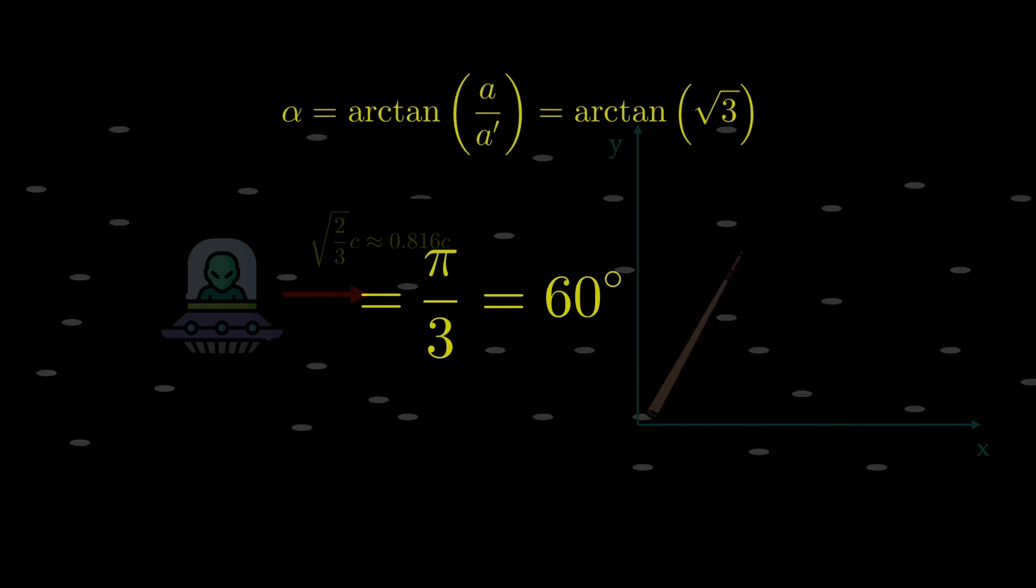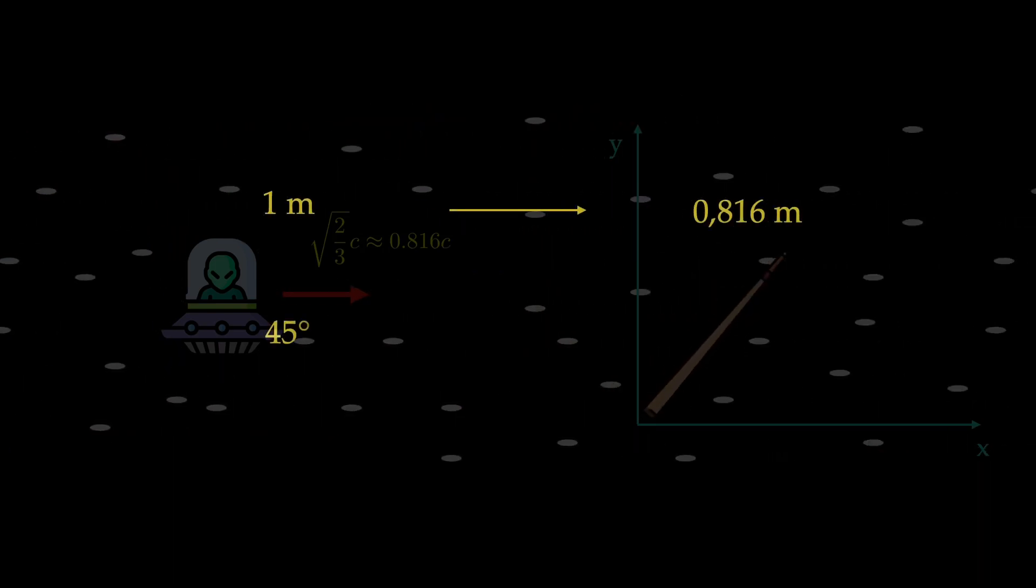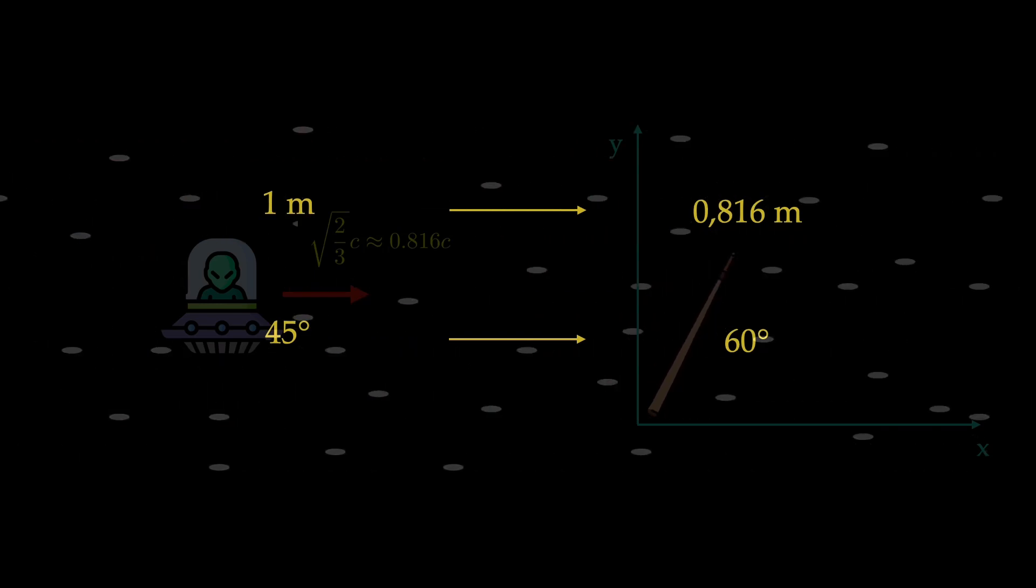So for the alien the length of the rod shrinked from 1 meter to 0.816 meters and the angle went from 45 degrees to 60 degrees.